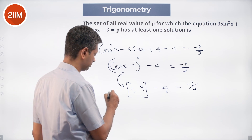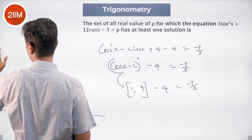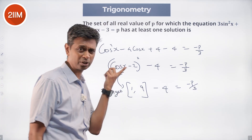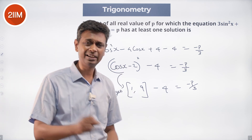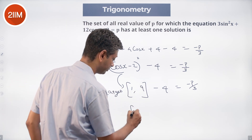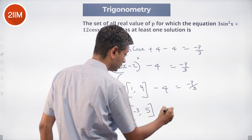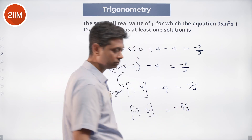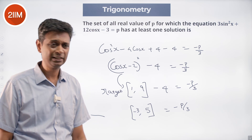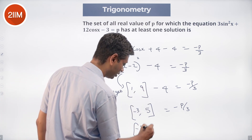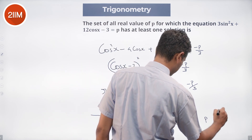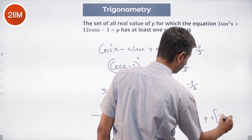So (cosx - 2)² - 4 ranges from -3 to 5, and this equals -p/3. Multiplying by 3, -p ranges from -9 to 15. Multiplying by -1, p ranges from -15 to 9. So p can take values from -15 to 9.